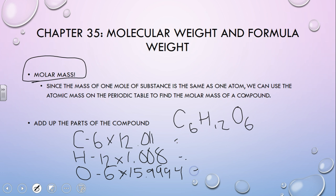All we have to do is multiply those together and add them up. We do six times 12.011 and this gives us 72.066. And we do 12 times 1.008 and that gives us 12.096. And then we do six times 15.9994 and that gives us 95.9964.